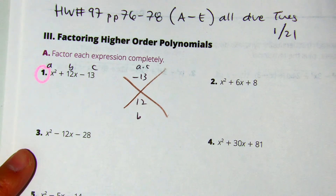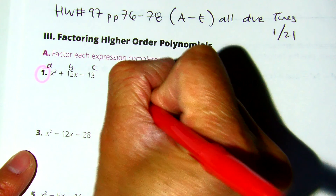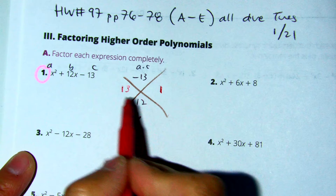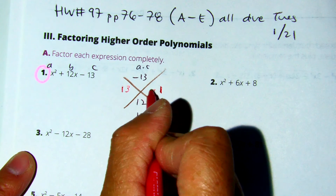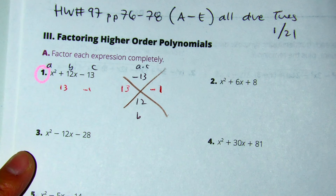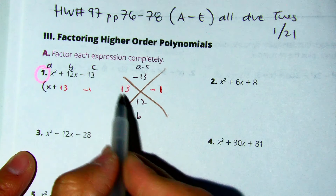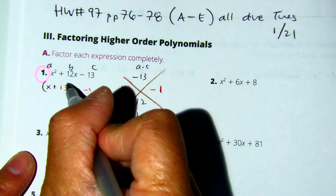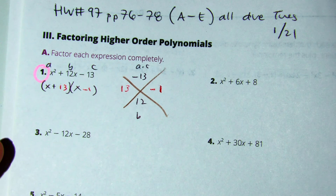Two numbers that multiply to be 13 are 13 and 1. But they need to add to be 12, so this is going to be a negative. So I have 13 and negative 1. I'll have X plus 13 because 13 is positive, and then X minus 1. Raise your hand if you got that.